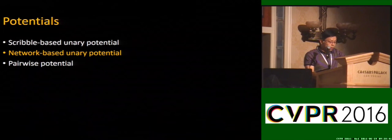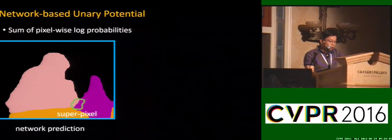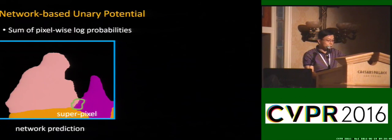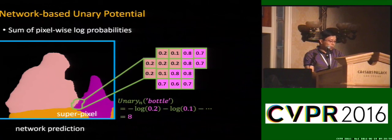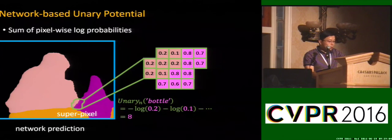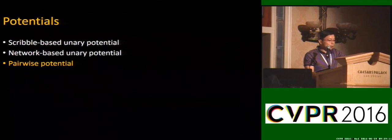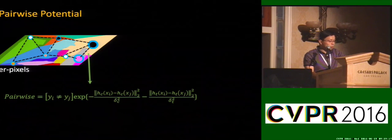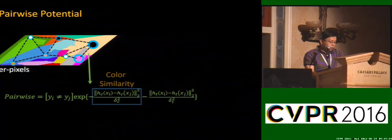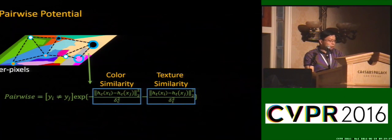Our second potential is defined on network prediction. Given a superpixel, we compute the cost of assigning a label based on network prediction results. This shows the output probabilities of assigning a label to a given superpixel. The final unary potential is the sum of pixel-wise log-probabilities of all pixels in that region. The last potential is the pairwise one to help label propagation, representing edges in the graphic model. It denotes appearance similarity between two adjacent superpixels, combining the difference of color histograms and texture histograms.